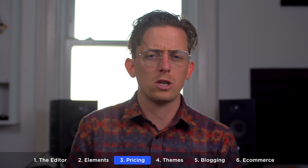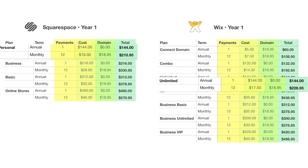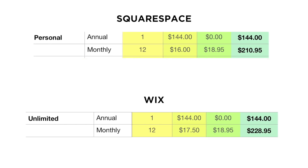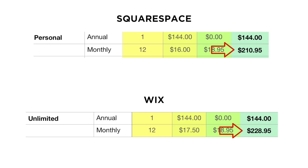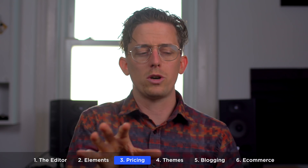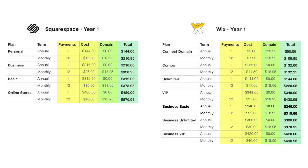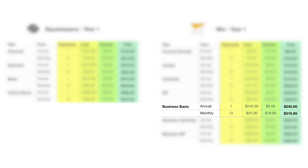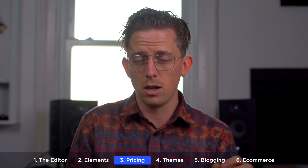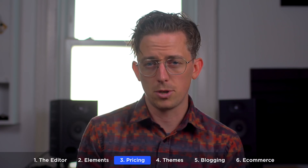The real comparison between Squarespace and Wix begins with Wix's Unlimited plan and Squarespace's Personal plan — these are the first two plans to offer unlimited bandwidth. They have the same annual cost, but Squarespace actually offers a cheaper monthly plan. When it comes to ecommerce, Squarespace is more expensive: Wix's ecommerce plan is $240 annually and Squarespace's basic plan is $312 annually. But as you'll see, Squarespace actually has better ecommerce.